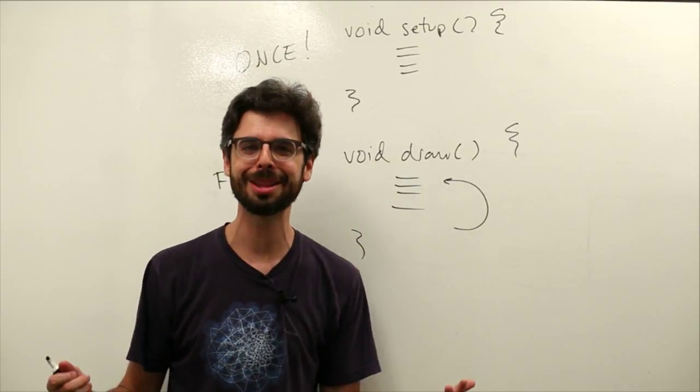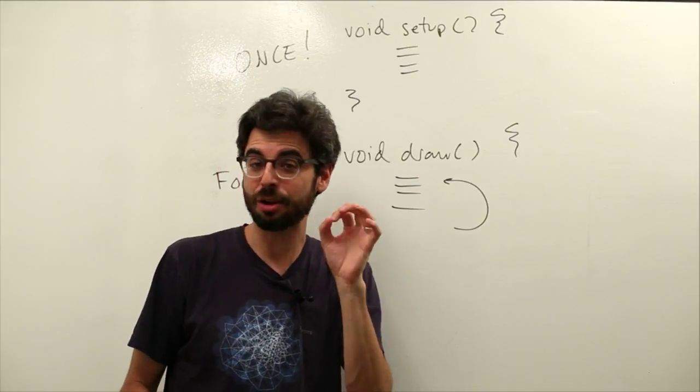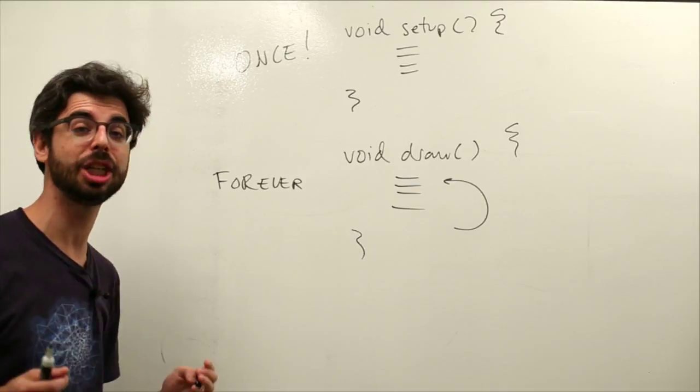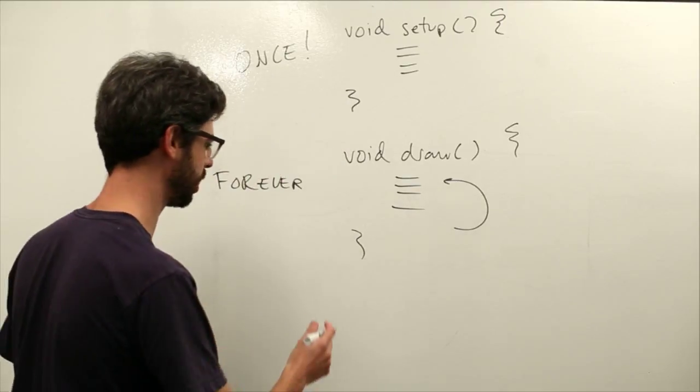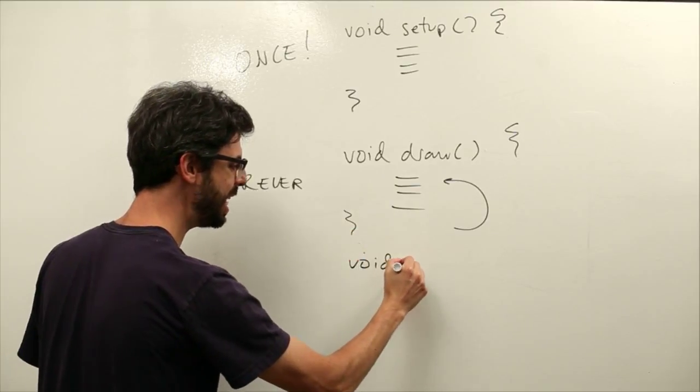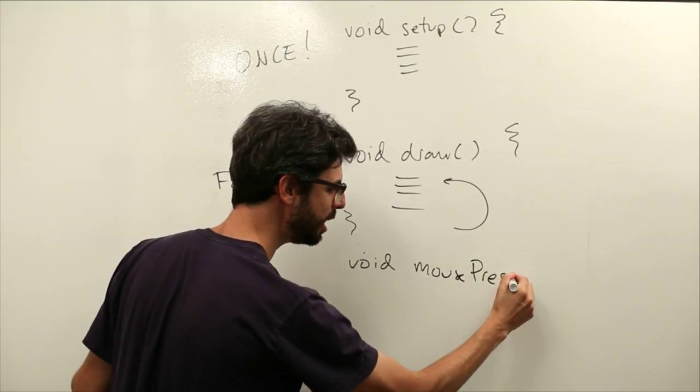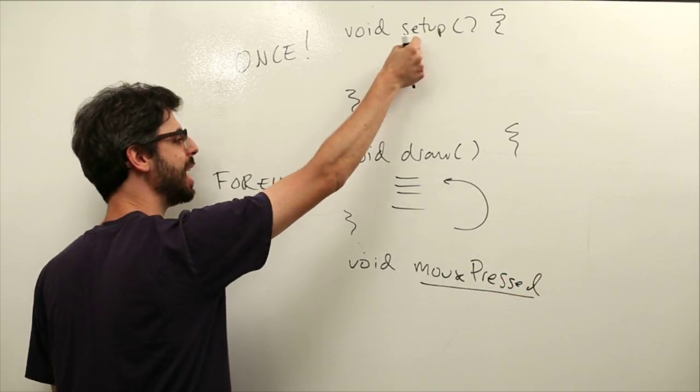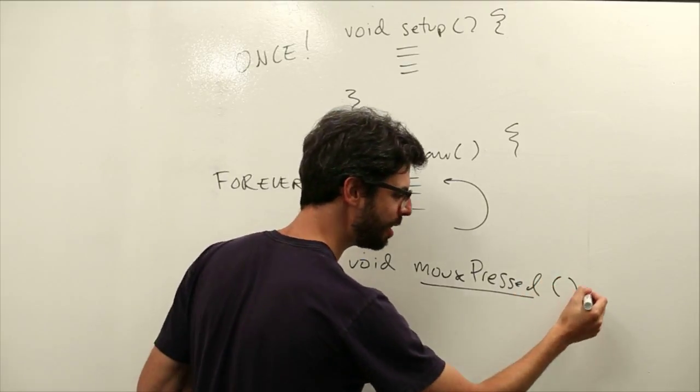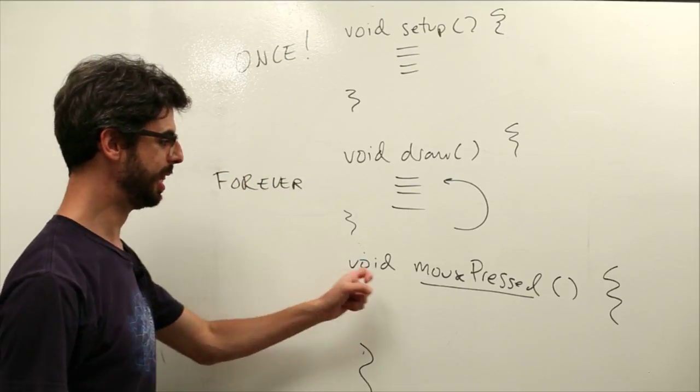Two obvious events that we can start with are this idea of an interaction event - a mouse click or a key pressed. For example, let's say we want an event to be triggered when the mouse is pressed. We can now write another block of code, another function definition. This time it's called mouse pressed. It's setup, we have draw, now we're adding mouse pressed. We put our parentheses, we put our open curly bracket, and our closed curly bracket.